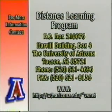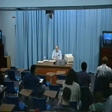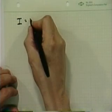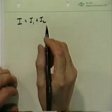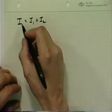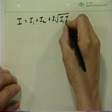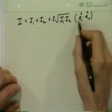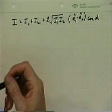Good morning everyone. Last class we were talking about basic two-beam interference. Let's start by writing down the basic equation: if we have two beams of irradiance I₁ and I₂, when we combine these two coherent beams, the resulting irradiance is given by the sum I₁ plus I₂, plus two times the square root of I₁I₂, times the dot product of the unit polarization vectors, times cosine of α, where α is the phase difference between the two interfering beams.